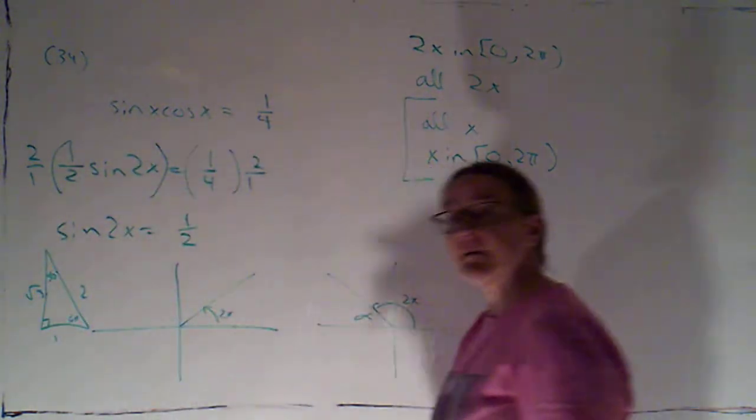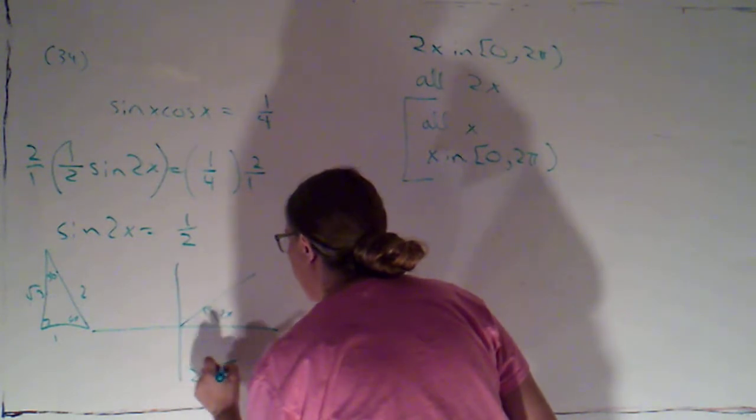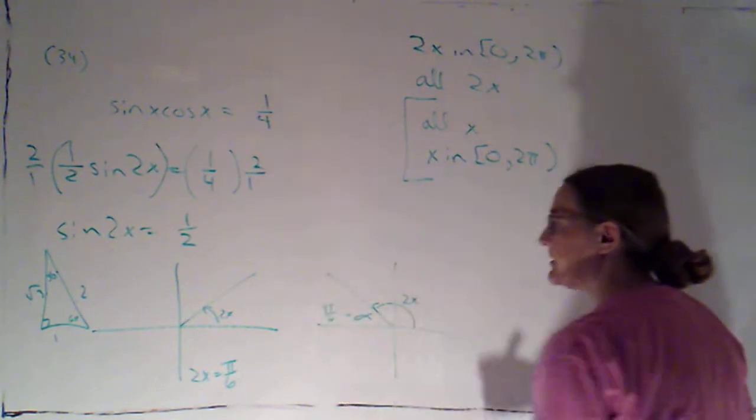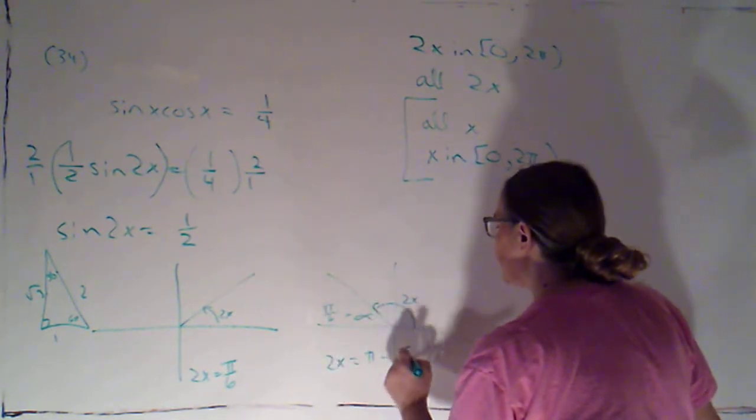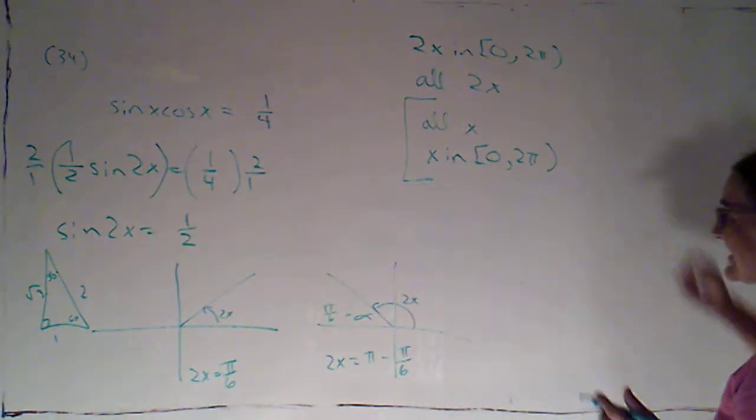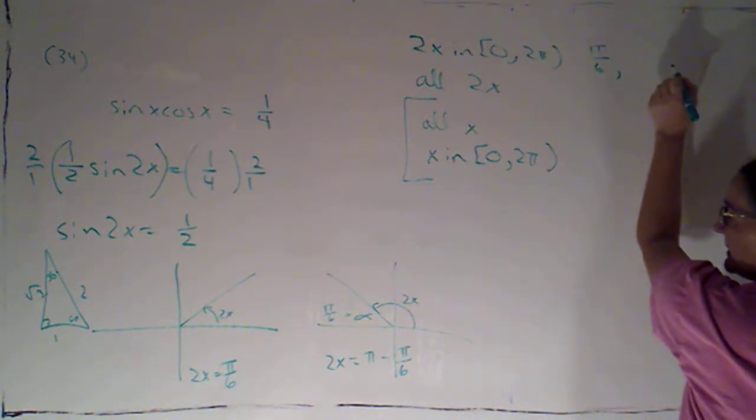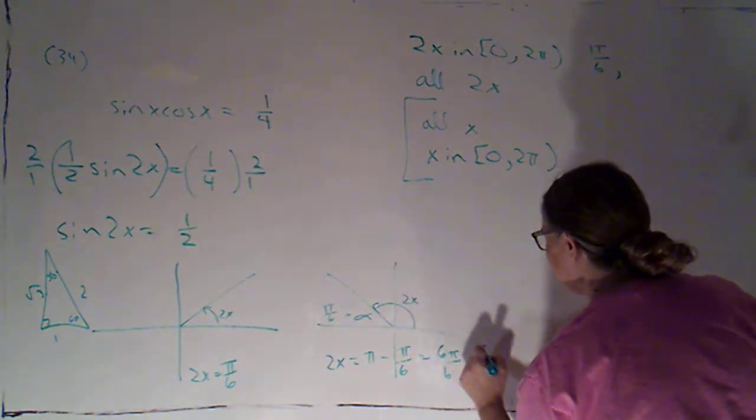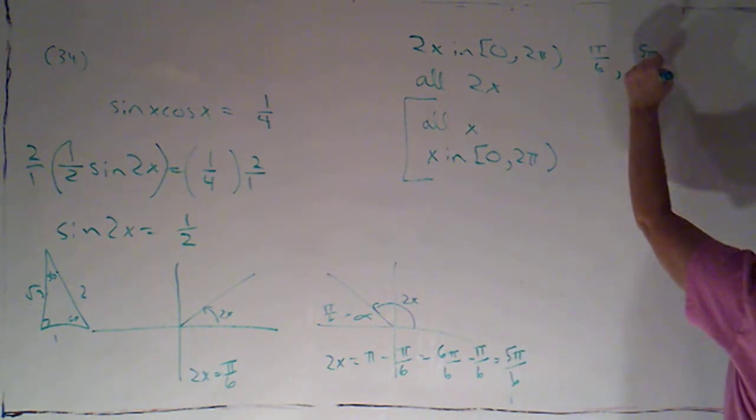Looks like that's going to be 30 degrees or pi over 6. So here 2x would equal pi over 6. And here, if this alpha, this reference angle is pi over 6, here 2x is pi minus pi over 6. So my values of 2x between zero and two-pi are going to be pi over 6. And, oh, I should finish this. This would be 6 pi over 6 minus pi over 6. So that would be 5 pi over 6.